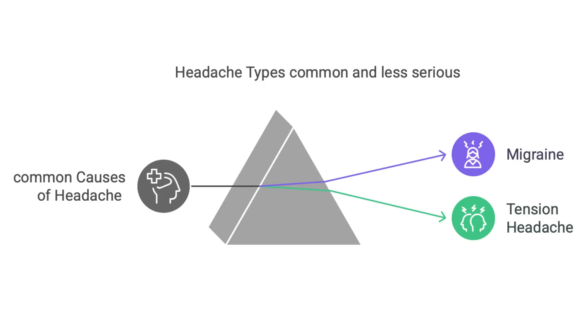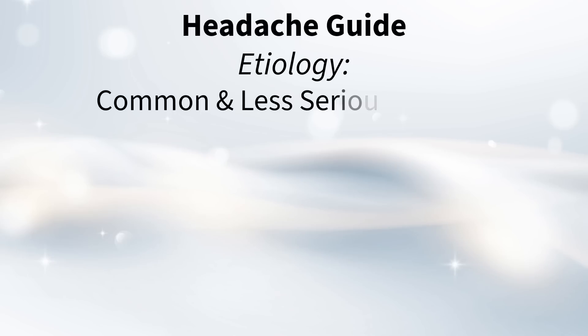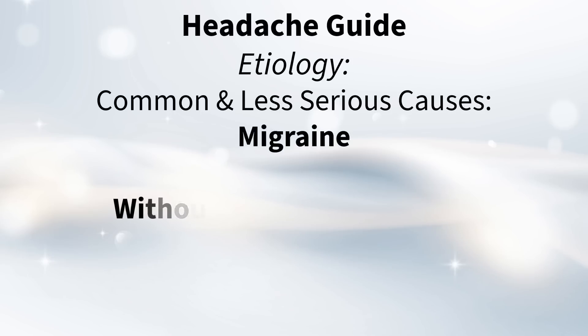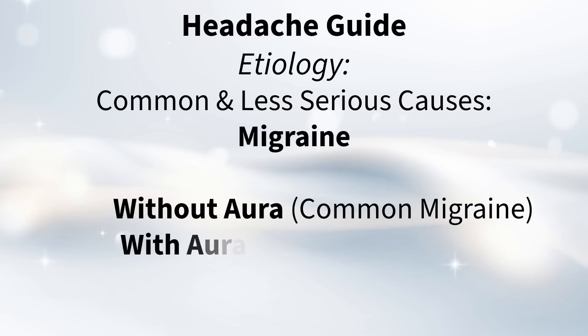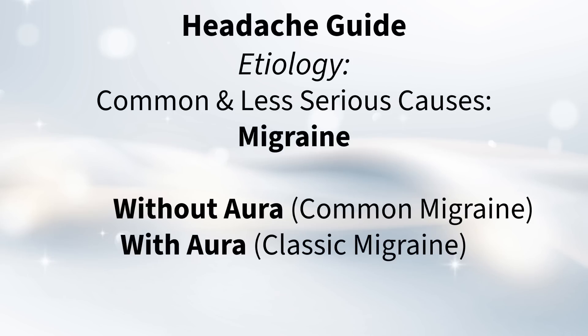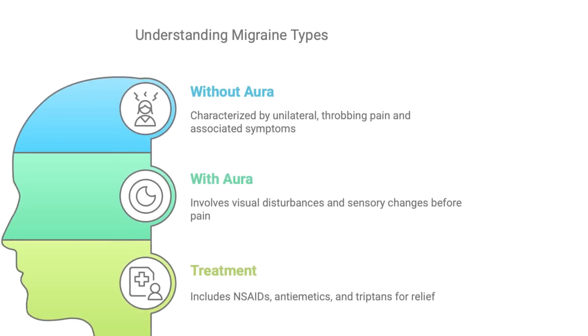The one everyone's probably familiar with at least a little bit is migraines. The guide splits these into migraine without aura, which they call common migraine, and migraine with aura, which is classic migraine. What's the main thing to understand about the difference there?